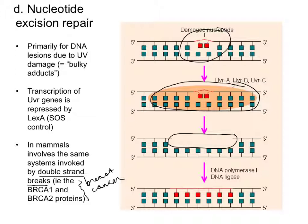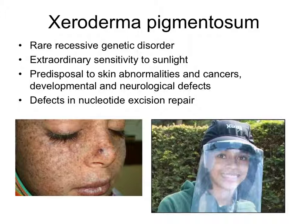Xeroderma pigmentosum is a rare genetic disease resulting in extraordinary sensitivity to sunlight. People with this condition have a defective nucleotide excision repair system and must avoid the sun with great diligence, because any UV exposure leads to mutation in skin cells, predisposing them to skin abnormalities and cancers, as well as developmental and neurological defects. The best current treatment is ensuring complete avoidance of UV energy.